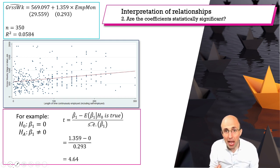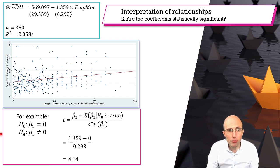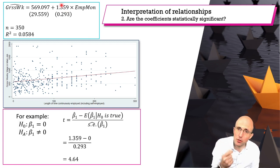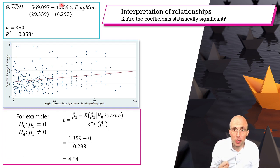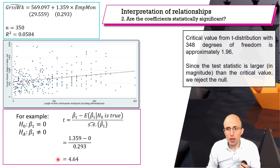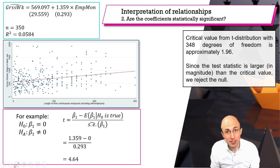We need to compare this with the critical value from the T-tables. We have 350 observations and have estimated two coefficients — beta-naught-hat and beta-one-hat — so we lose two degrees of freedom, giving us 348 degrees of freedom. The critical value in the T-distribution with 348 degrees of freedom is approximately 1.96. Our test statistic of 4.64 is larger in magnitude than 1.96, therefore we reject the null hypothesis.